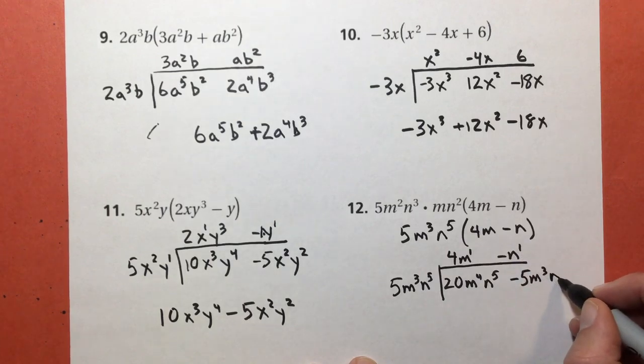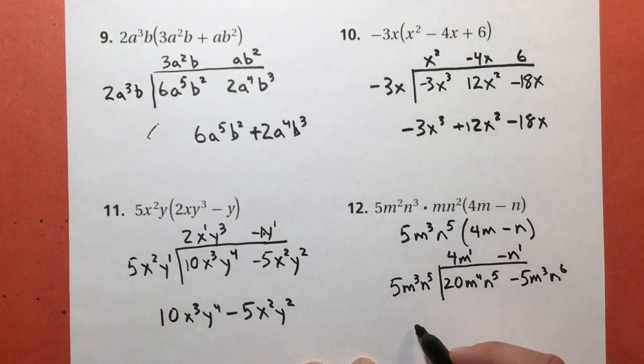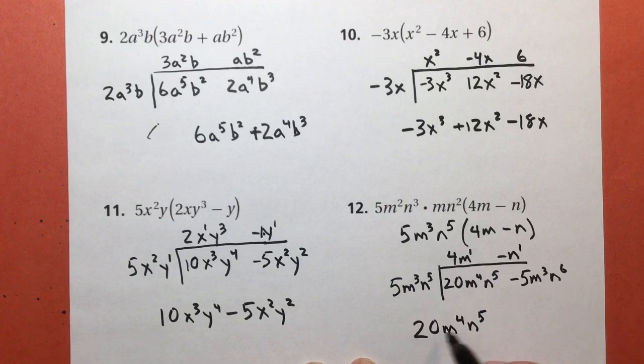5 times 4 is 20. m to the third times m to the first is m to the fourth. And the n to the fifth power just comes along. 5 times negative 1 is negative 5. m to the third. There's no m's up here. But n to the fifth power times n. 5 plus 1 equals 6. So my final answer, 20 m to the fourth n to the fifth. Subtract 5 m to the third n to the sixth.